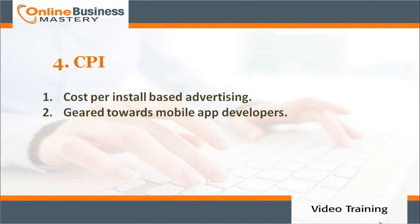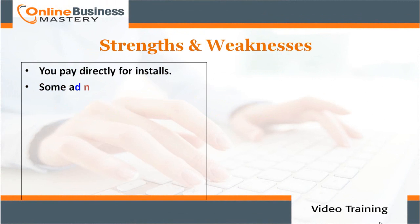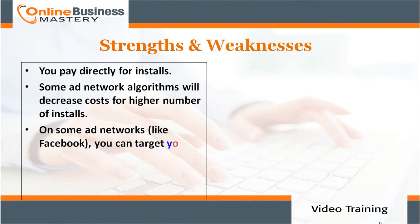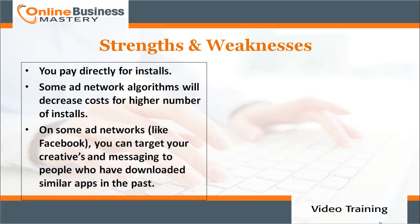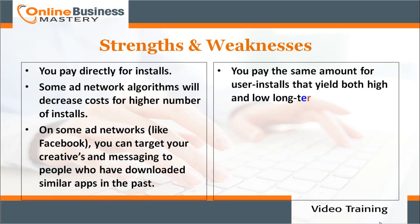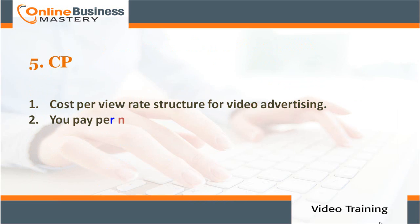Number four: CPI — cost per install based advertising, geared toward mobile app developers. Strengths: you pay directly for installs, and some ad networks' algorithms will decrease cost for higher numbers of installs. On networks like Facebook, you can target your creative and messaging to people who have downloaded similar apps in the past. Weakness: you pay the same amount for user installs that yield both high and low long-term user values.